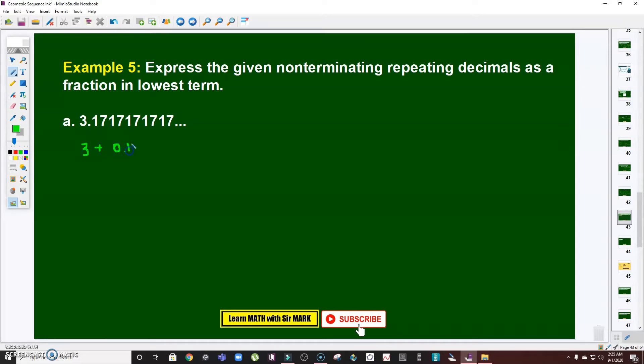Take note, this number can be written as 3 plus 0.17 plus 0.0017, so that will be four zeros followed by 17, and so on. See that?